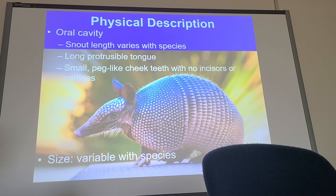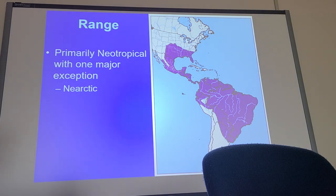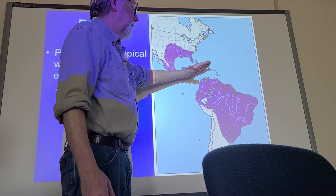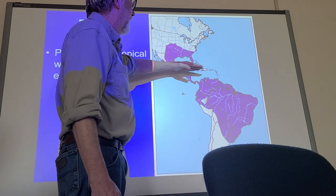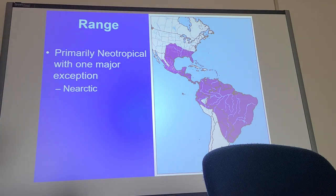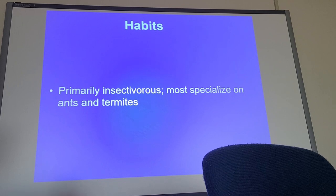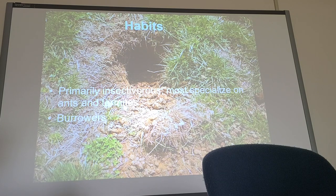There is some variability in size — historically there's been a huge variability. Primarily, without a doubt, armadillos are Neotropical, covering everything from about Mexico down through South America. One major exception in the Nearctic is the one we all know: the nine-banded armadillo. All of them are primarily insectivorous, and they are burrowers — they build their own burrows, live in them, and come out at night to forage.